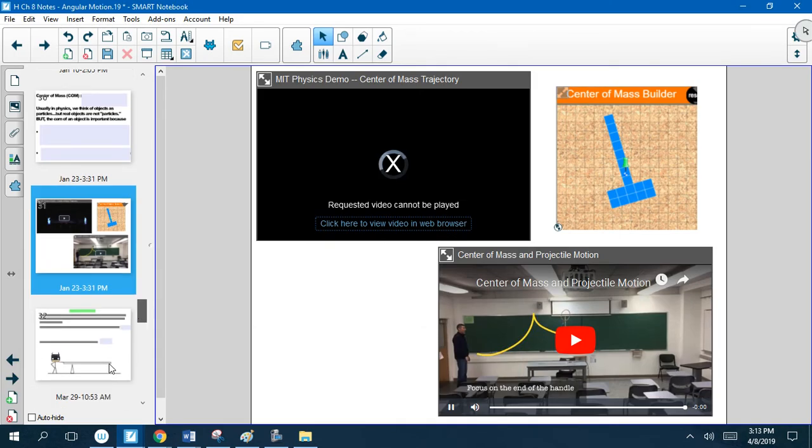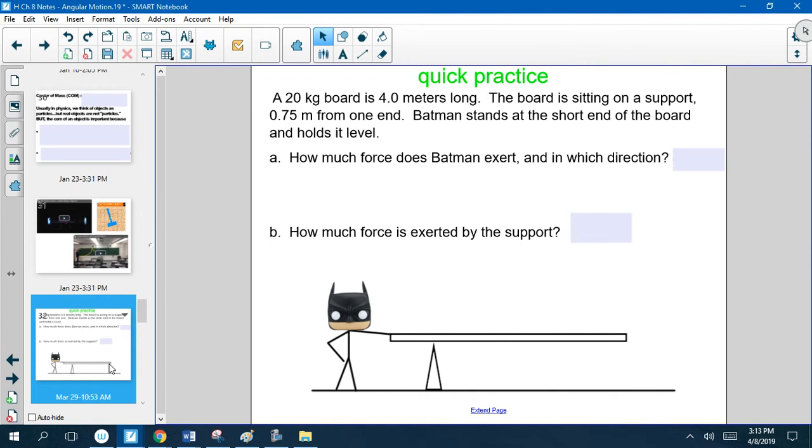Okay, so let's go ahead and do a practice problem real fast and kind of round out the time here. So let's say we have Batman, and Batman sitting over here with this 20 kilogram board. The board is four meters long. Batman is at point 0.75 meters, and it's a uniform board, and we're trying to figure out how much force Batman is going to exert.